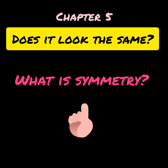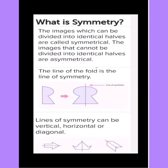What is symmetry? Images which can be divided into identical halves are called symmetrical. The images that cannot be divided into identical halves are asymmetrical. Look at this figure. The line of the fold is the line of symmetry. Lines of symmetry can be vertical, horizontal, or diagonal.